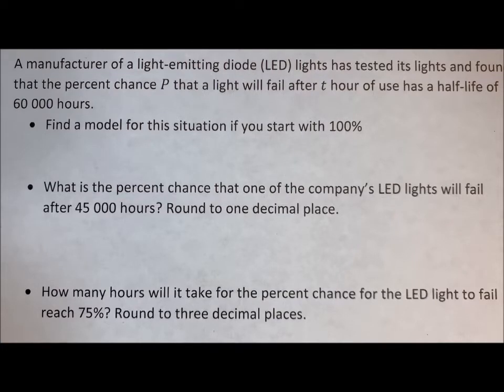A manufacturer of a light-emitting diode LED lights has tested its lights and found that the percent chance P that a light will fail after t hours of use has a half-life of 60,000 hours. Find a model for this situation if you start with 100%.